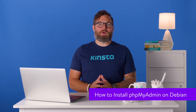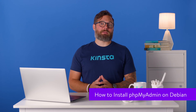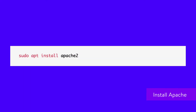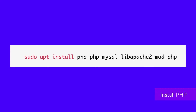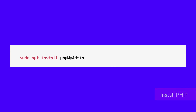Much like CentOS 7, on Debian you'll need to install a LAMP stack using the command line manually. First, get Apache, then install MariaDB. Like CentOS 7, this Linux distribution works better with MariaDB, and we recommend using that one instead. Run the secure installation to add a database password and ensure everything is secure. Finally, install PHP and a few extra packages your server will need to work, and then install phpMyAdmin.